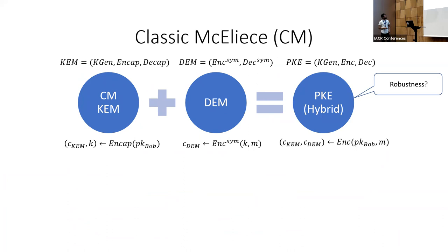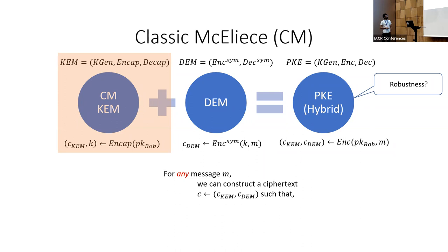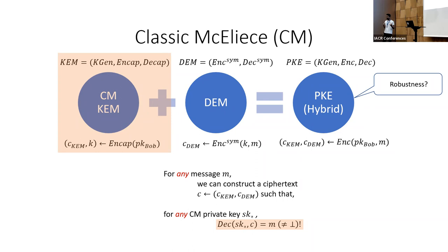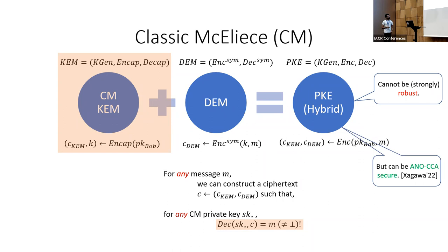Without going into lower-level details, we showed that because of the way the base PKE scheme of Classic McEliece is defined, we can exploit some of its properties to show that for any message m that Alice wants to send to Bob using Classic McEliece, we can construct a hybrid ciphertext c such that if we try to decrypt the same ciphertext not only using Bob's secret key but any secret key in the Classic McEliece system, not only do we get a valid message back, we get back the same message m that Alice wanted to send to Bob. This is sufficient to break the formal notion of strong robustness for Classic McEliece, and this result holds no matter how clever or strong you make your DEM.